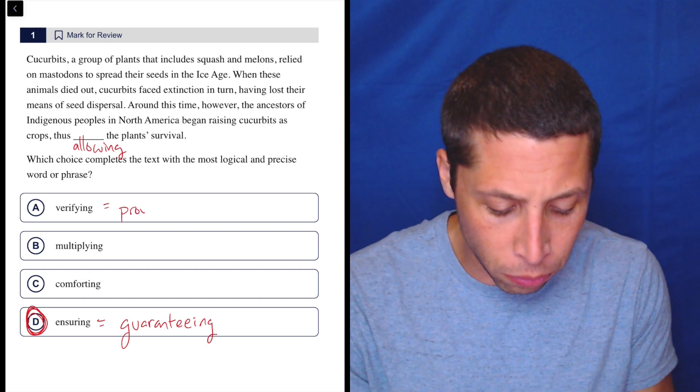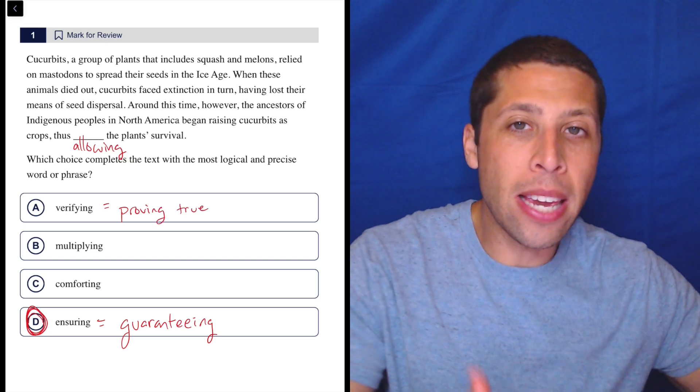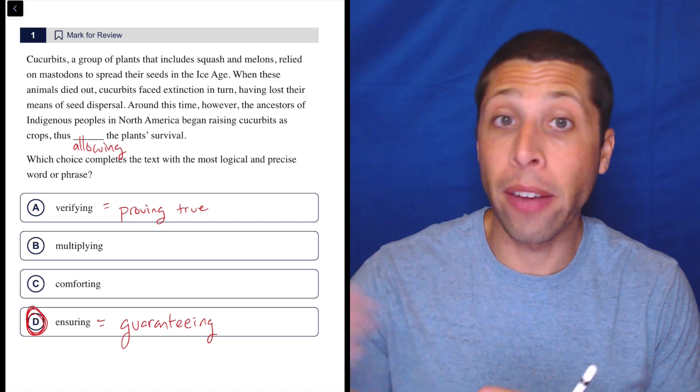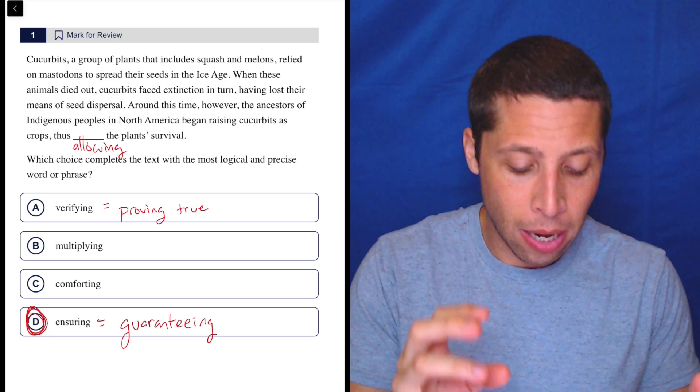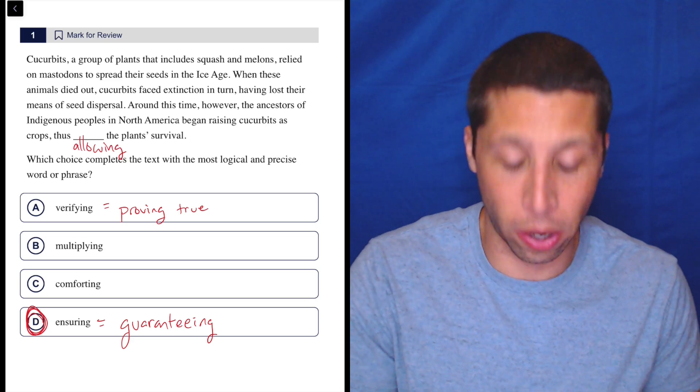So verifying means proving true, but it doesn't mean making it true in the world, right? So to verify, you can verify a claim, you can verify a fact. So you can do research and prove something true, but you can't prove a plant true, a plant survival true. That's not how that word works.